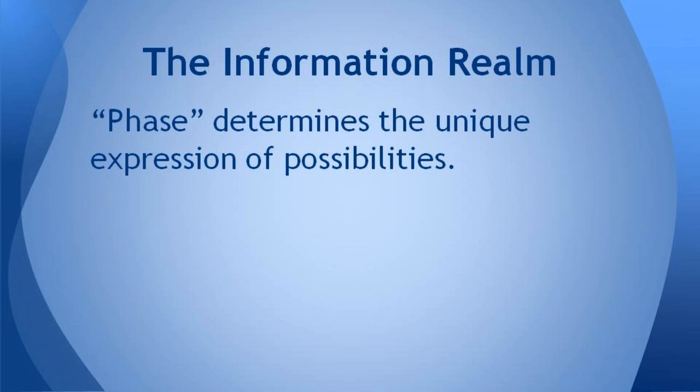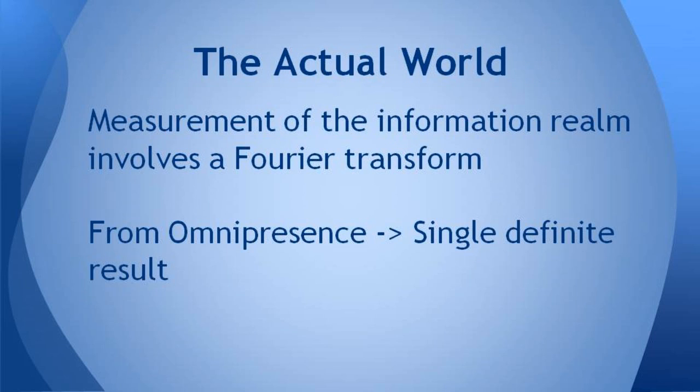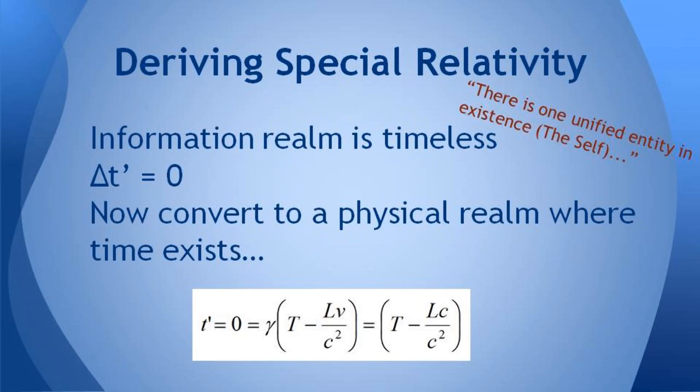But the phase of the information realm determines what unique possibilities we can access or can be expressed in a given time and space. So not every single possibility is accessible or creatable in a moment. And using this approach, we would say that a measurement of the information realm involves a Fourier transform, which converts us from omnipresence to a single definite result in space-time.